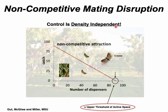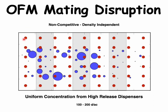Control is density independent. On the y-axis you can see percent trap catch from 100% down to zero, and as you add more dispensers you reach the point where you fill the entire orchard with pheromone at a high enough concentration that the upper threshold of the active space is reached and male flight shuts down. Because OFM mating disruption is non-competitive and density independent, as long as you have enough high-releasing dispensers distributed uniformly, you can achieve good uniform shutdown of OFM males regardless of their population distribution in the orchard.